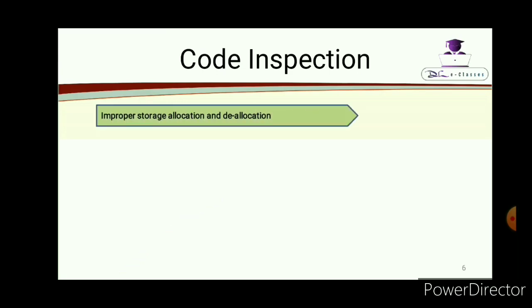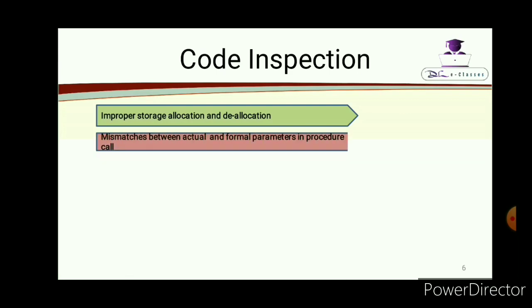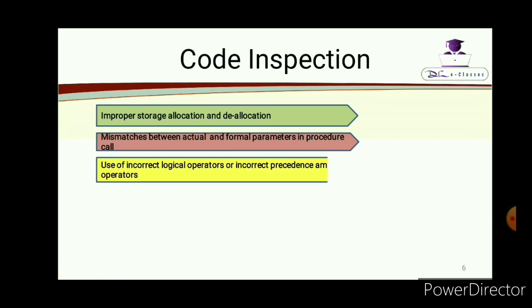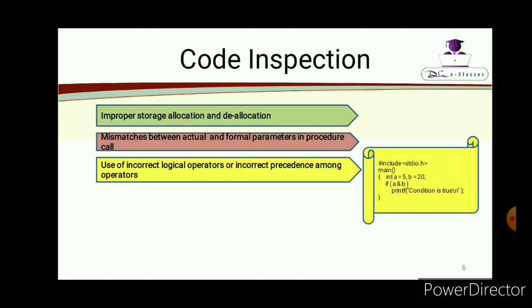Other classical errors include improper storage allocation and deallocation, and mismatches between actual and formal parameters in a procedure call — for example, a function void sum expects one integer parameter but is called with two integer parameters. Another error is use of incorrect logical operators or incorrect precedence among operators — for example, intending an AND operator between a and b but accidentally using a bitwise AND symbol instead.